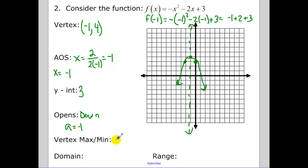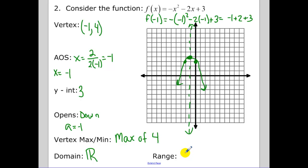The vertex is a maximum, and the maximum value is 4 — that's the highest point. The domain is all real numbers because we can plug in positives and negatives. Since the vertex is a max, all y-values are less than or equal to that maximum value of 4.